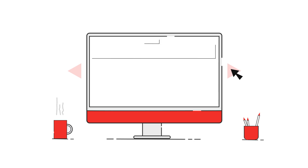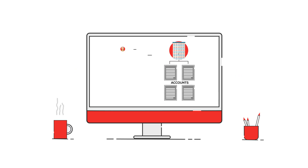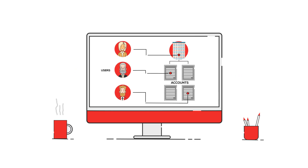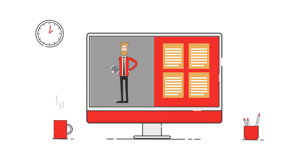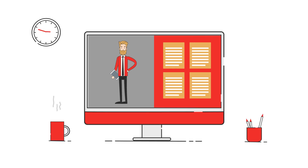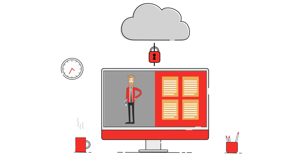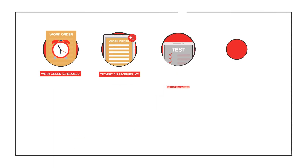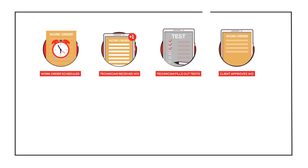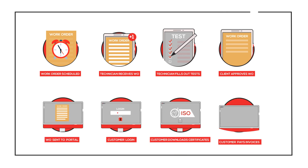Calvault provides per-user permissions including division-based access and audit history. With Calvault, you have 24/7 access to all of your calibration records in a certified secure SOC 2 Type 2 data center with 99.98% uptime. Spend less time managing certificates, tracking tolerances, and paying bills with Calvault.